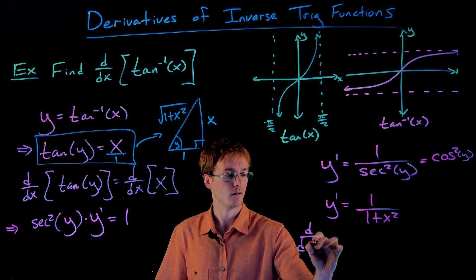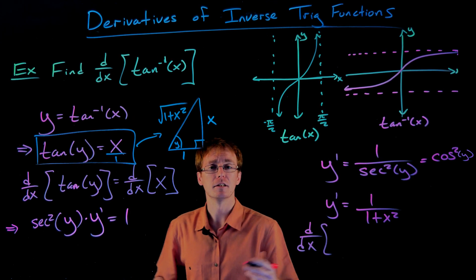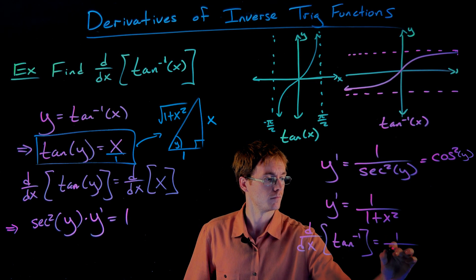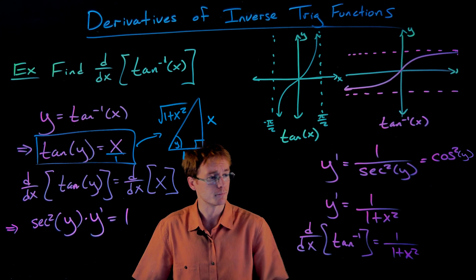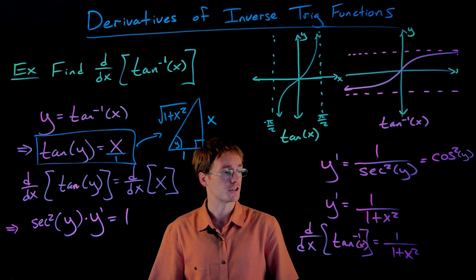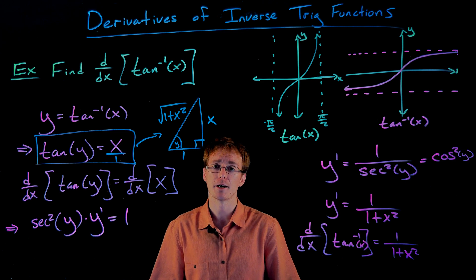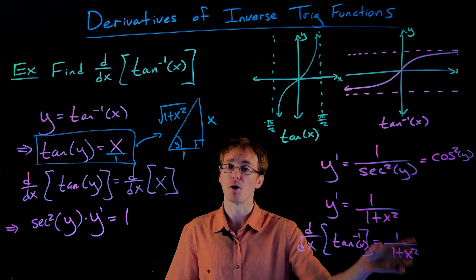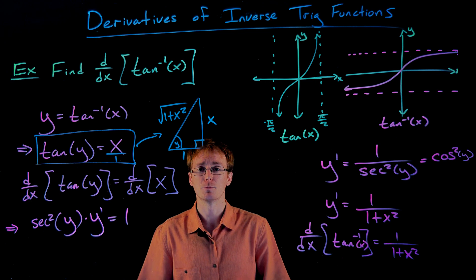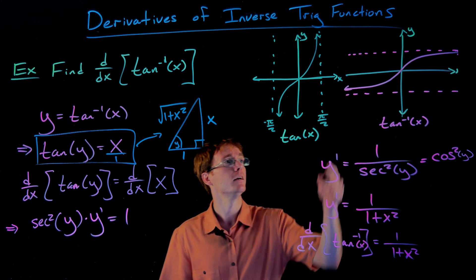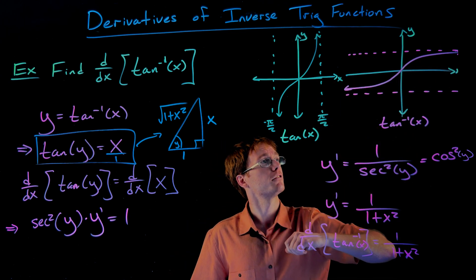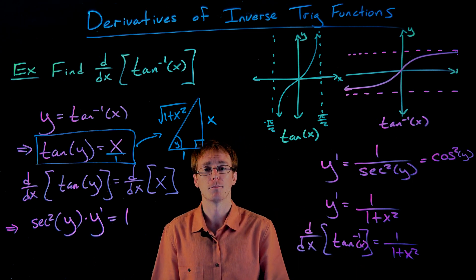Don't forget: y prime is just the derivative of inverse tangent. So we've proven this shortcut — the derivative of arctangent of x is equal to 1 over 1 plus x squared. Look at this formula: it's always positive. The numerator is always positive and the denominator is always positive, so our derivative is always positive, which means our function should always be increasing. The inverse tangent function is indeed always increasing, so that matches up with our result.